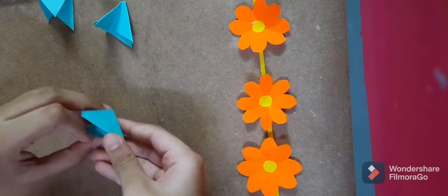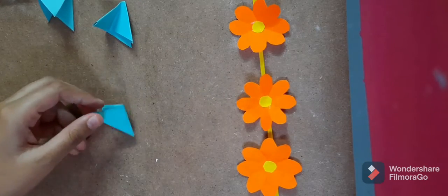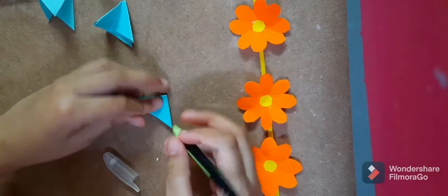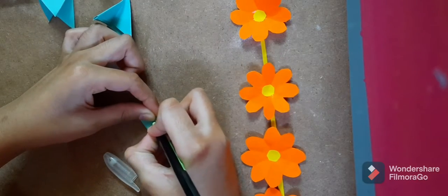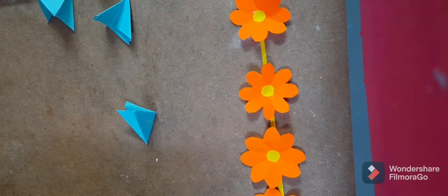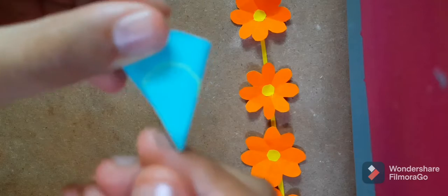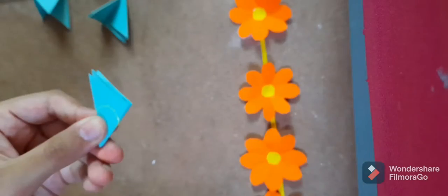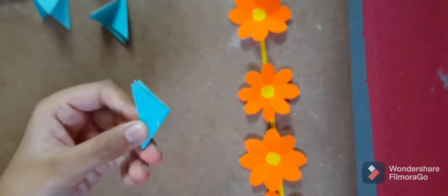After that, you're going to take one of the papers and take anything like a pen, pencil, anything to draw, and draw a petal shape. And cut that petal shape out.